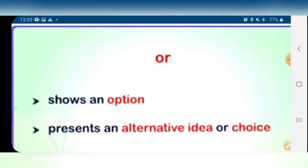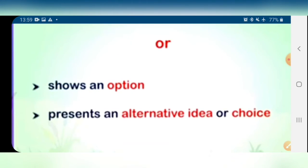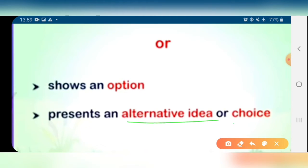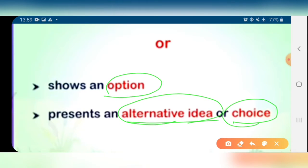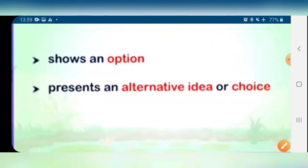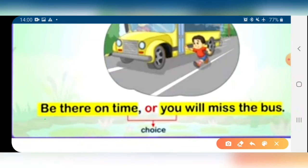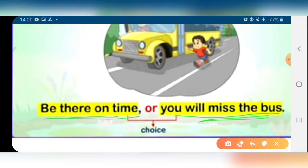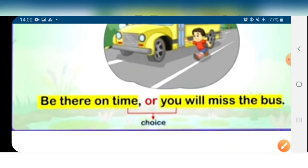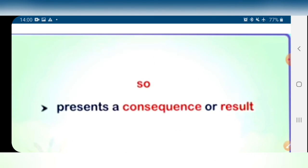The next is O-R, 'or'. 'Or' is used to show an option. When we have an alternative idea, a choice, we use 'or'. For example: 'Be there on time or you will miss the bus.' Or if I ask you: 'What do you want to have, pizza or burger?' — I am giving you the option, you have to choose one. That time we use 'or'.